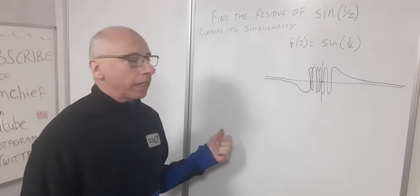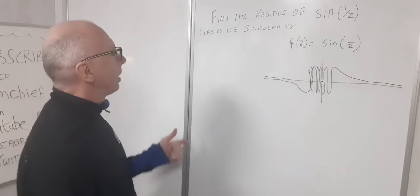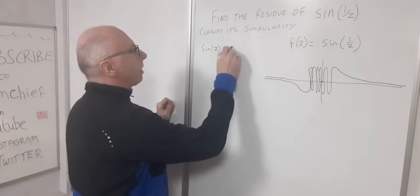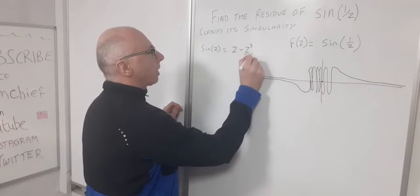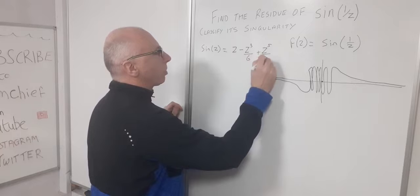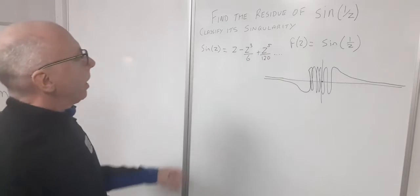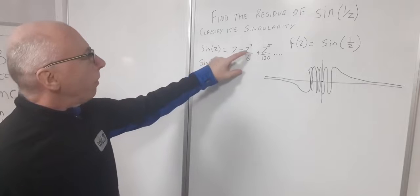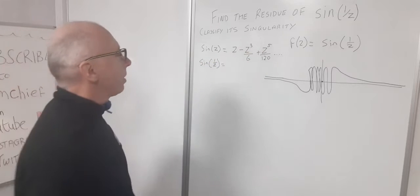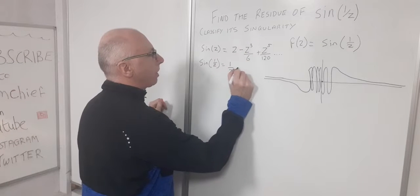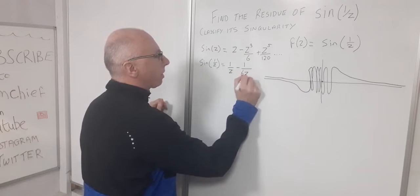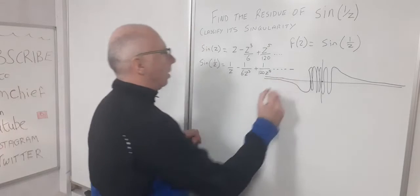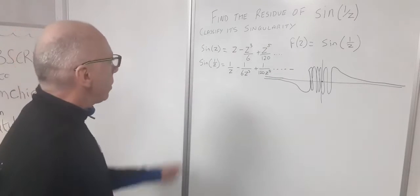Let's look at the Laurent series for sin(1/z). The Taylor series for sin(z) is z minus z³/6 plus z⁵/120 and so on. For sin(1/z), we substitute 1/z for z, giving the Laurent series: 1/z minus 1/(6z³) plus 1/(120z⁵) and so on.